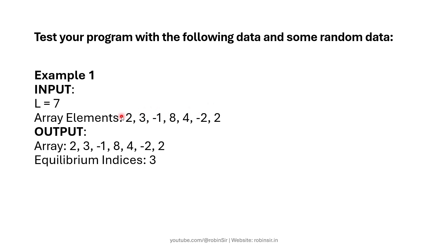The array has 2 at index 0, 3 at index 1, -1 at index 2, and 8 at index 3. Index 3 is the equilibrium index because on its left we have three elements: 2 + 3 + (-1) = 4. On its right, 4 + (-2) + 2 = 4 as well. The sum on both sides is the same, so 3 is the only equilibrium index in this example.